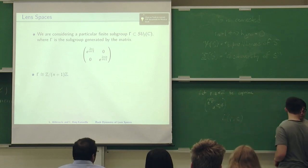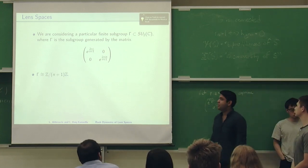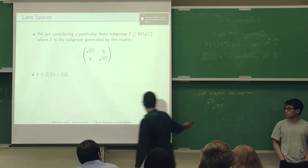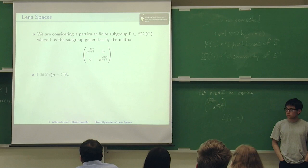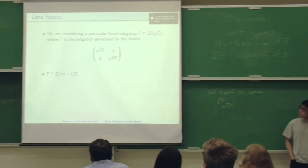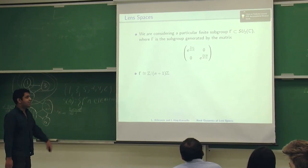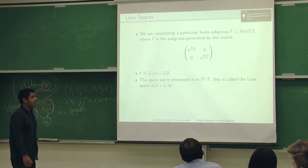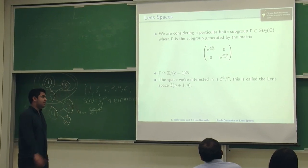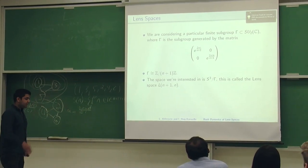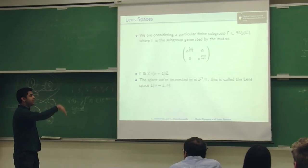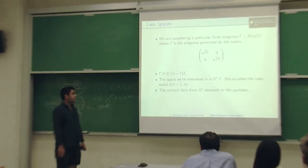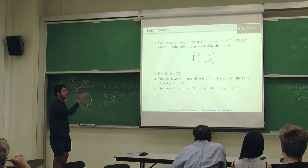Now that you know general things about contact geometry, we'll talk about the space we're working with. We're going to take the finite subgroup of SU2 of C given by this matrix. As I'm sure you can see, this is isomorphic to Z in the law of N plus one Z. The lens space we're considering is S3 mod this gamma. This is called the lens space L N plus one N. This is a manifold because our action is free everywhere except for the origin where it's got a fixed point. It's a contact manifold because the contact form and contact structure both descend to the quotients.